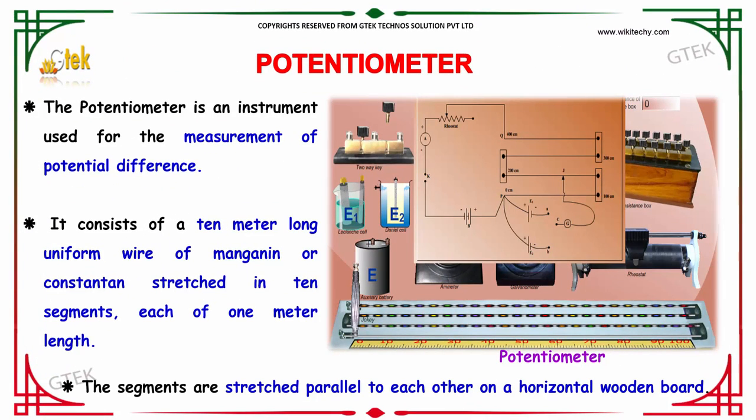The potentiometer is a device or instrument used for measuring the potential difference. It consists of a 10 meter long uniform wire of manganine or constantin stretched in 10 segments, each of 1 meter length.